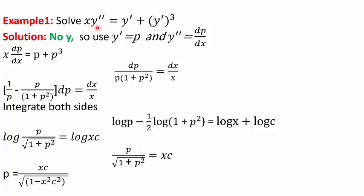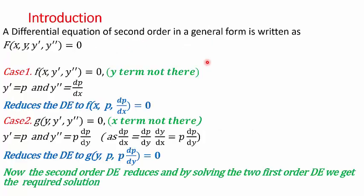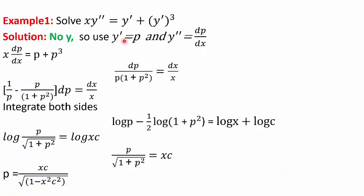In the first example, we are asked to solve xy'' = y' + (y')³. You can see there are no y terms. We will use y' = p and y'' = dp/dx — this is the first substitution when there are no y terms. On substituting in the given differential equation, our equation reduces to x·dp/dx = p + p³. You can separate the variables, which gives us dp / (p(1 + p²)) = dx/x. This is the first-order differential equation we have obtained.